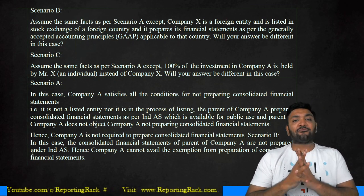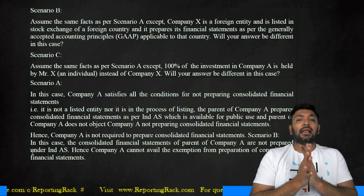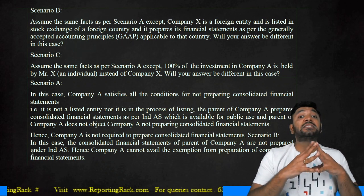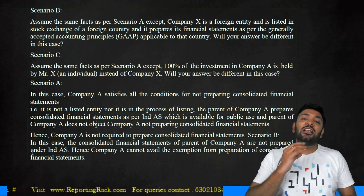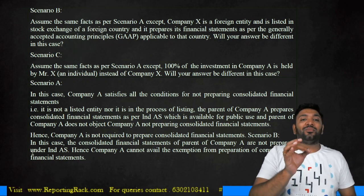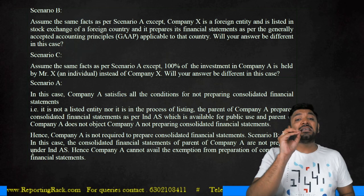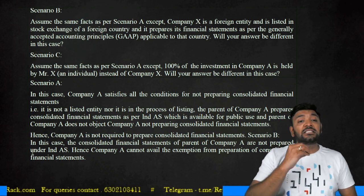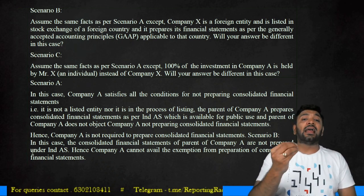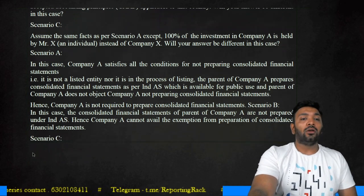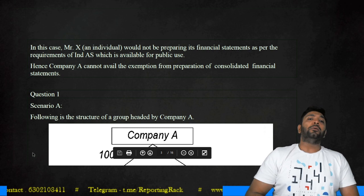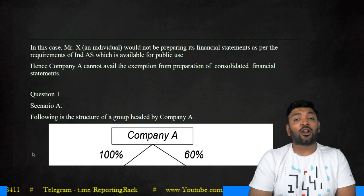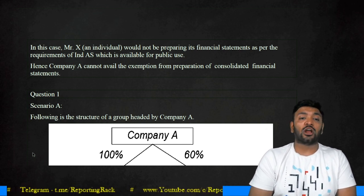Look at Scenario C: assuming the same facts as Scenario A, except that 100% of the investment in Company A is held by Mr. X instead of Company X. Will your answer change? An individual is not covered under Ind AS. Mr. X is an individual controlling 100% shares of Company A. Since Mr. X is not preparing financial statements on a consolidated basis, the exemption is not available to Company A. Therefore, Company A cannot avail the exemption from preparing consolidated financial statements.